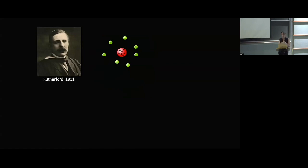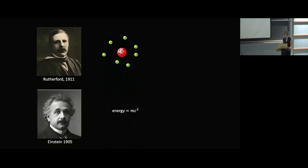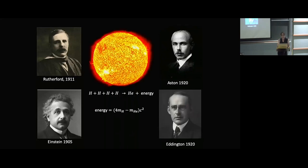Now, to get to this conclusion took a lot of time. First, scientists needed to understand that matter was made of atoms, and the atoms themselves were made of nuclei and electrons, and that was discovered by Rutherford in 1911. They also needed general relativity to get E=mc². And then they needed the experiments of Aston to know that the mass of one helium nucleus is actually larger than four hydrogen nuclei.